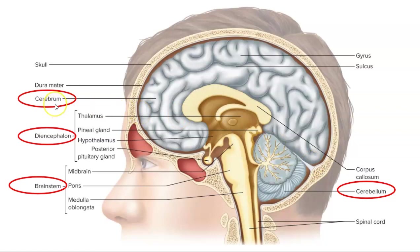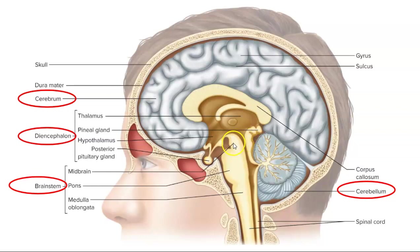We've already looked at the cerebrum. In this video, we'll look at the diencephalon, the brainstem, and the cerebellum. The diencephalon has several components — we'll focus on three: the thalamus, the hypothalamus, and the posterior pituitary gland. The brainstem is made up of the midbrain, the pons, and the medulla oblongata.